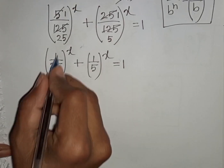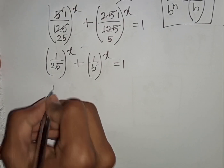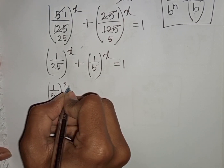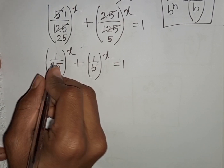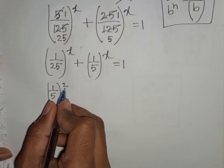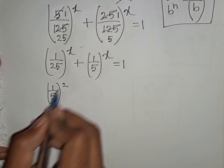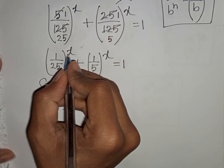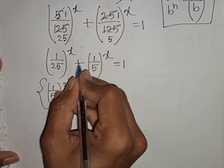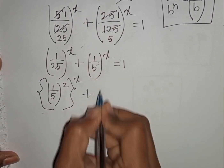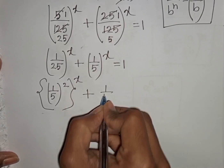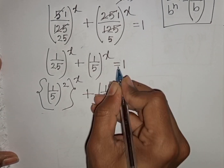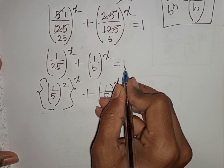Now 1 over 25 can be written as (1 over 5) squared, since 1 squared is 1 and 5 squared is 25. So the first bracket can be written as (1 over 5) power 2, then power x, plus (1 over 5) power x equals 1.